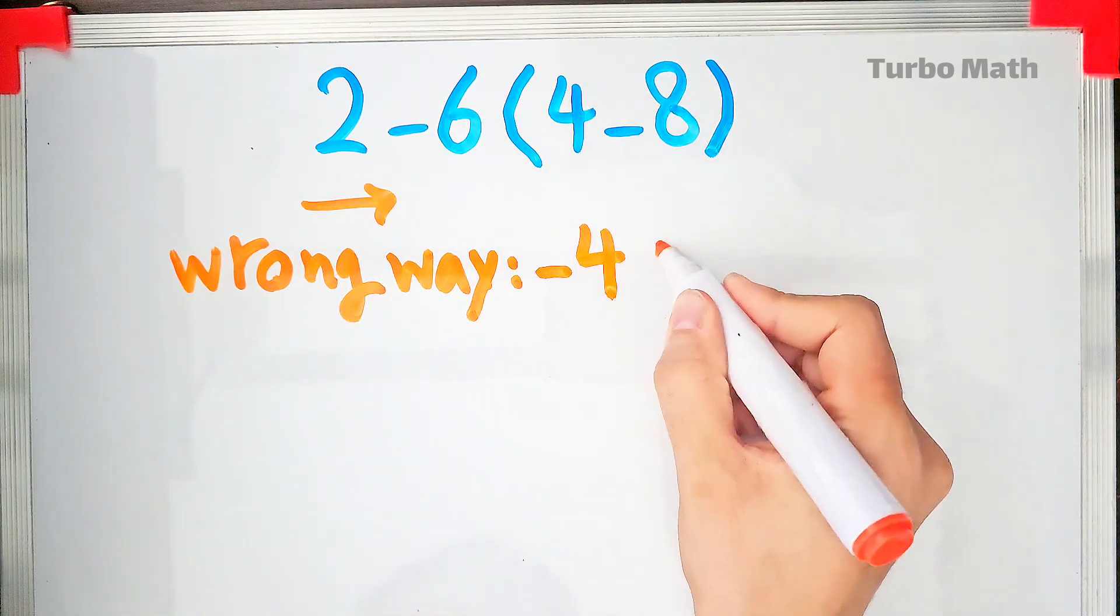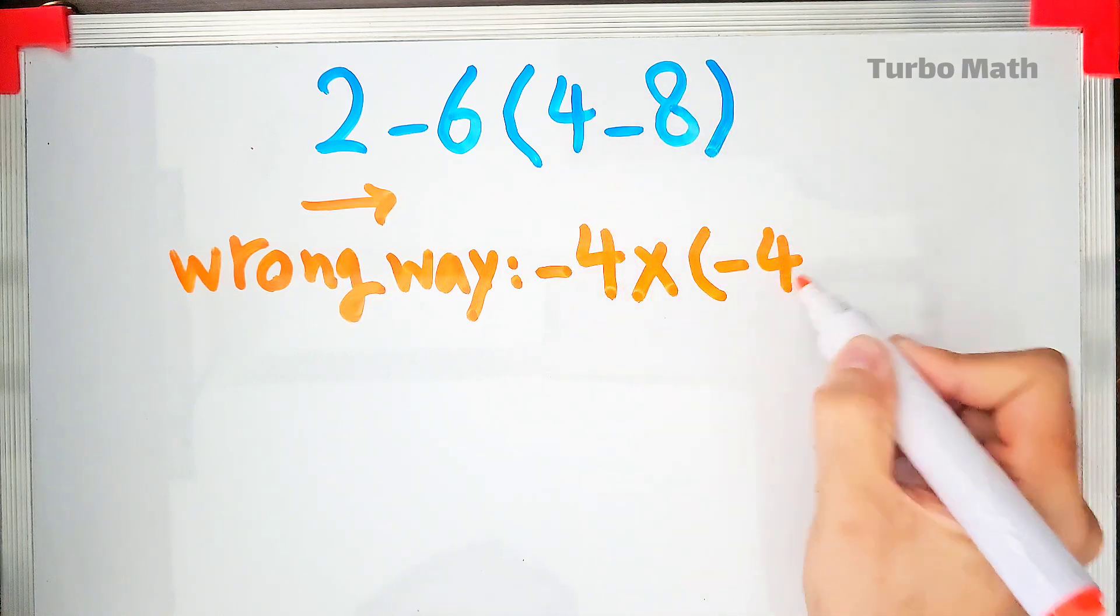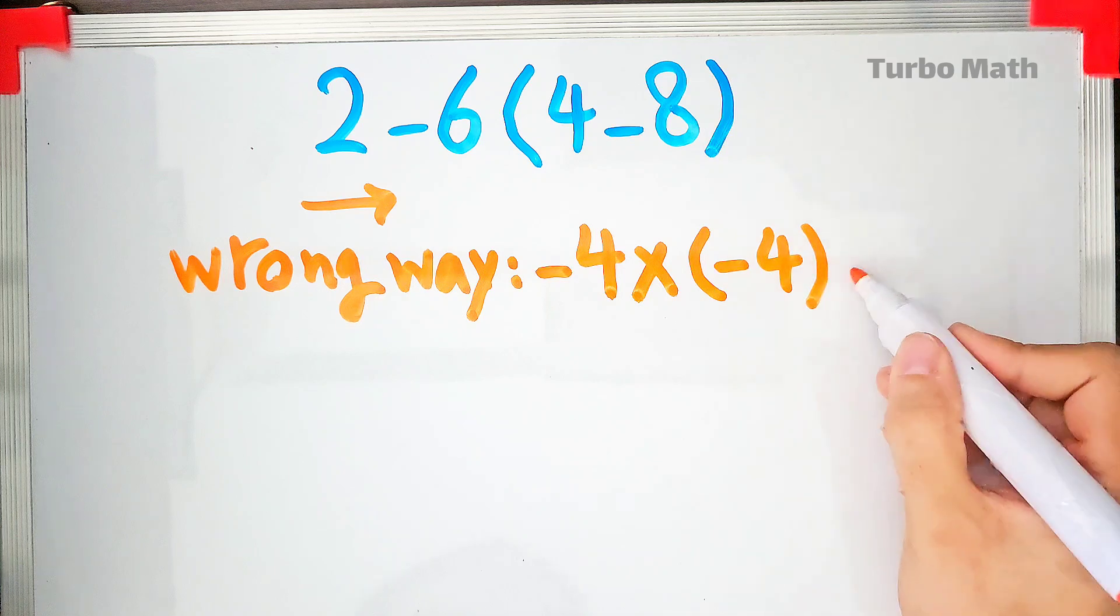2 minus 6 equals negative 4 times negative 4 equals 16. But this answer is definitely wrong.